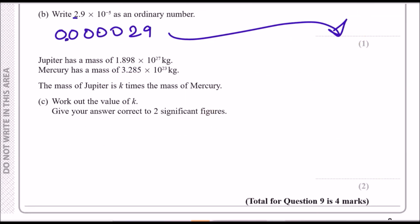Jupiter has a mass of 1.898 × 10²⁷ kg — that's a lot. Mercury has a much smaller mass. Don't look at the figures in front; look at the powers of 10. This is 10²⁷ versus 10²³, meaning Jupiter has four more digits after that — so Jupiter is way bigger.